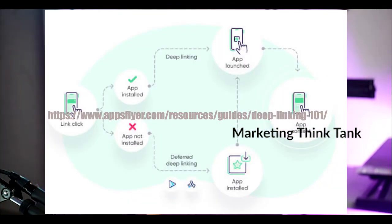The second type is called a deferred deep link. People see an ad, click on it, and if they already have the app installed they go directly to the product page. If they don't have the app installed, they're redirected to the Play Store or App Store to download it. Here's what makes deferred deep links special: once they install the app, they will go directly to the page you wanted them to reach — that's the advantage deferred deep links have over standard deep links.